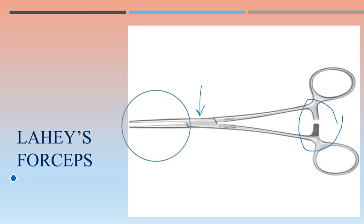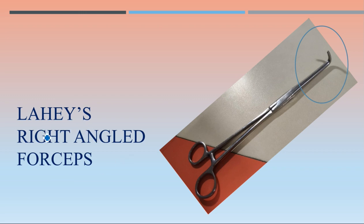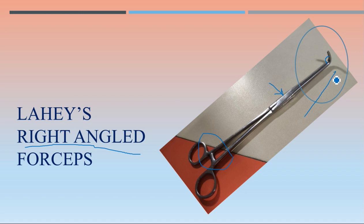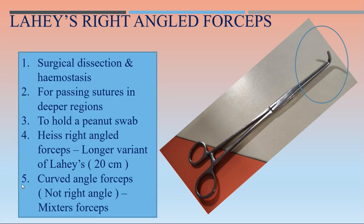The large-size artery forceps is Lahey's forceps. Then Lahey's right-angled forceps — the word 'right-angled' is important. You can see the presence of a lock, the joint, the long distal portion, and the angle is 90 degrees. This is Lahey's right-angled forceps — just try to identify the instruments first.